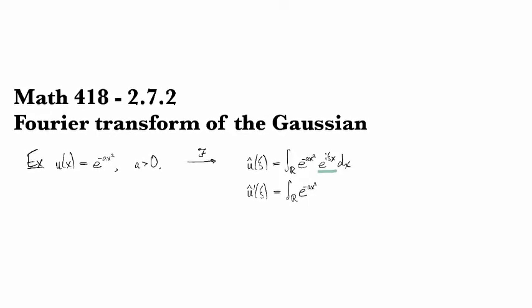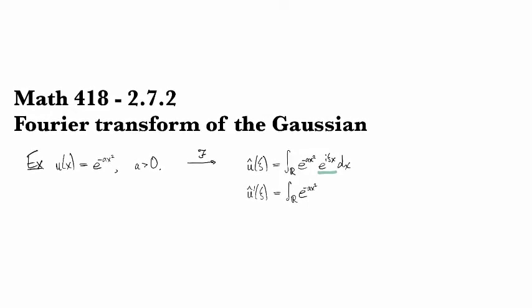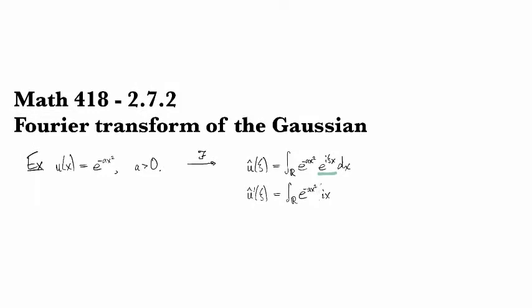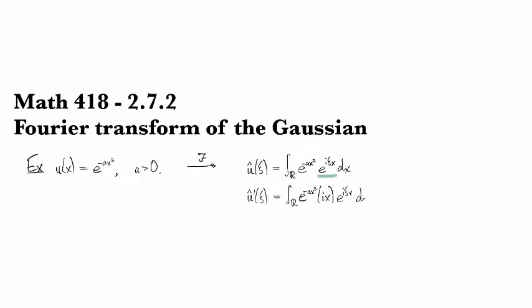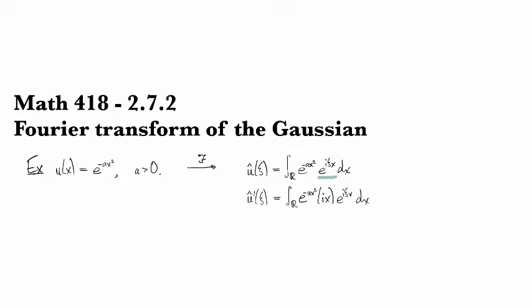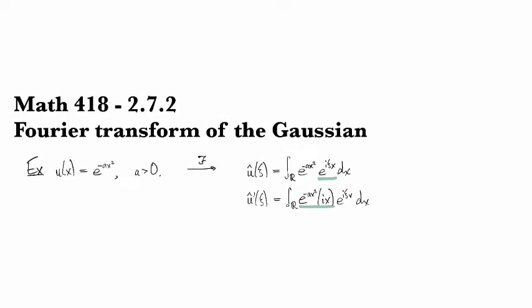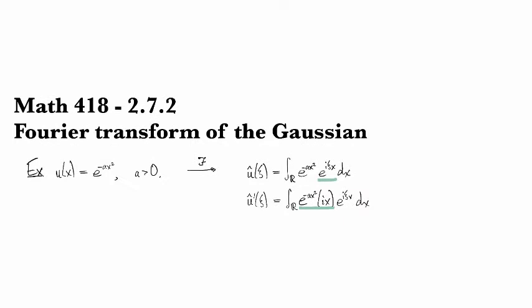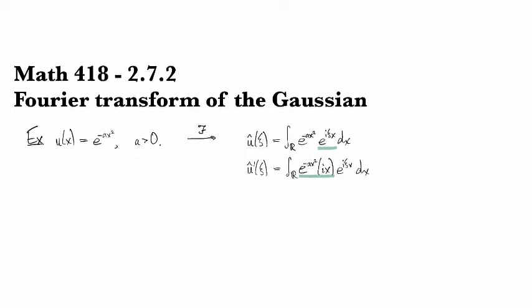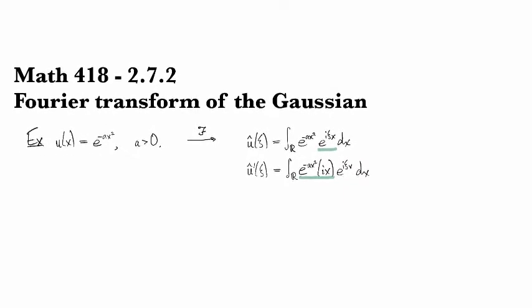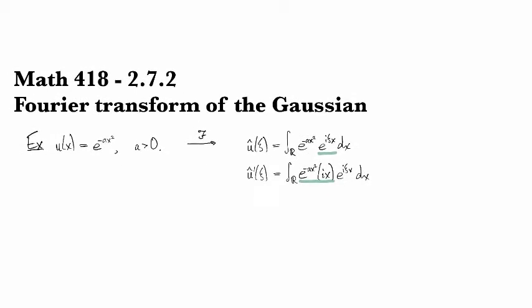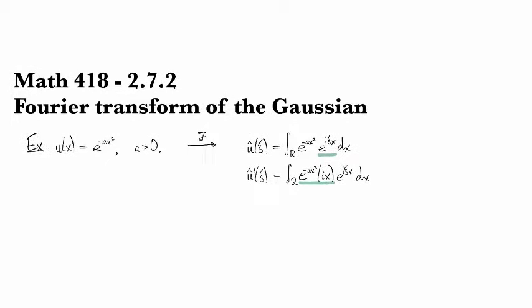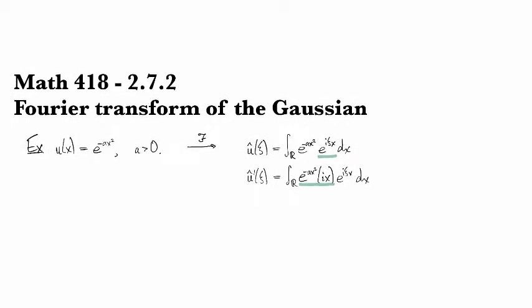The ξ only shows up in this latter part right here, so when we differentiate, it's going to kick out a factor of ix. And now if you look at this portion, you see that's essentially the derivative of the Gaussian there. We just need to get the i out of the way. And if we differentiate that Gaussian, it's going to kick out a factor of 2a as well.